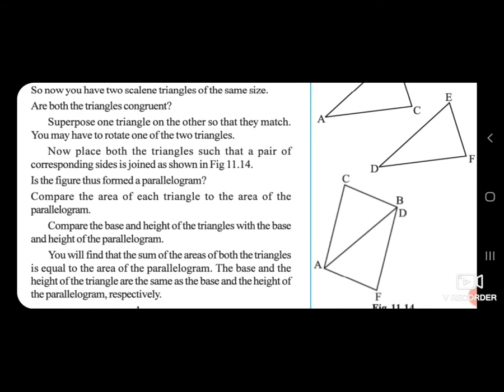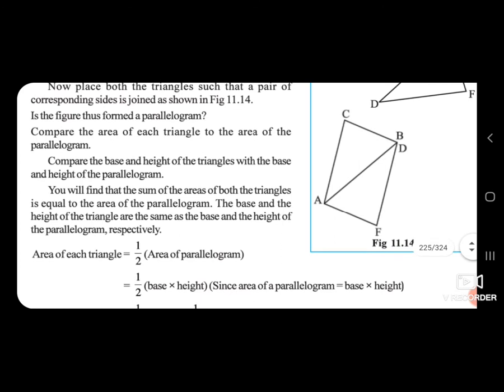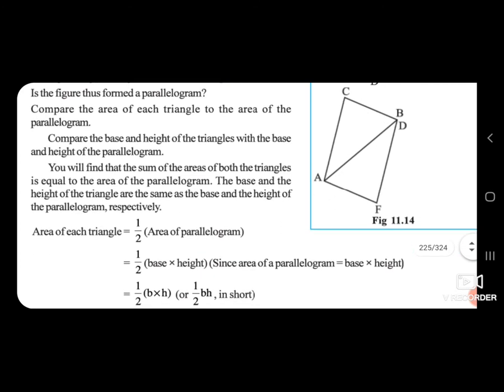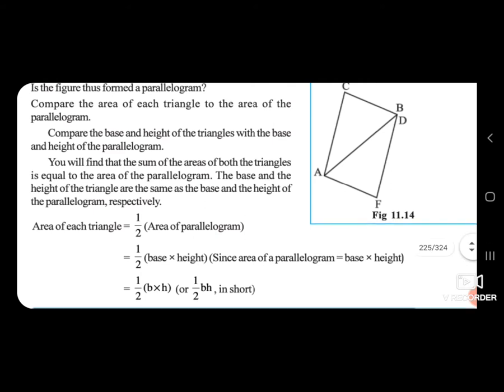Compare the area of each triangle to the area of the parallelogram. Compare the base and height of the triangles with the base and height of the parallelogram. You will find that the sum of the areas of both the triangles is equal to the area of the parallelogram. The base and the height of the triangle are the same as the base and height of the parallelogram respectively.